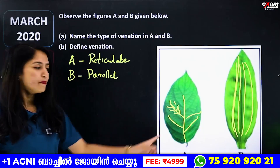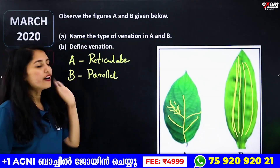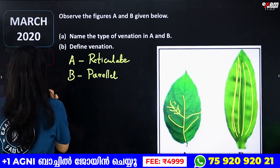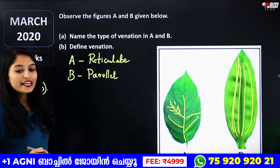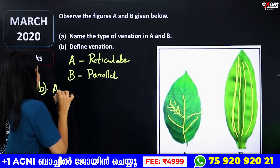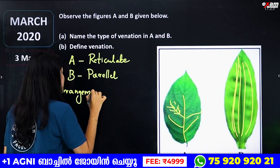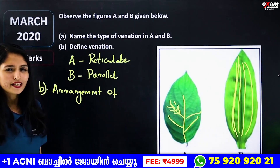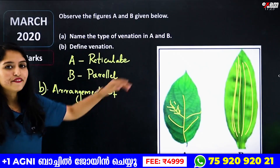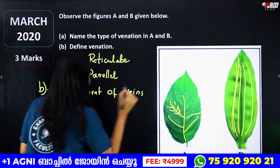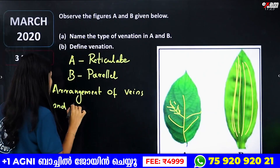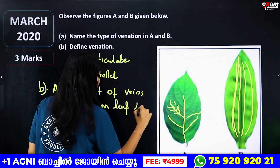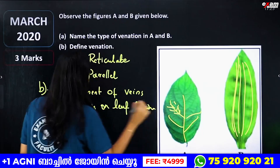Now define venation. The arrangement of veins and veinlets on a leaf lamina is called venation.